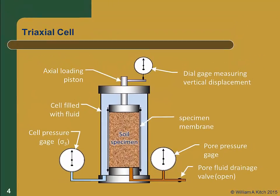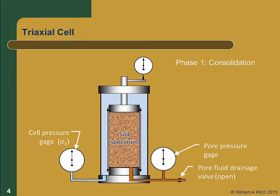There are two distinct phases in any triaxial test. The first phase is the consolidation phase, during which cell pressure is increased. This provides a uniform confining stress all around the specimen equal to the minor principal stress sigma3. During this phase, the soil may be allowed to consolidate or not, depending on the type of test being performed.